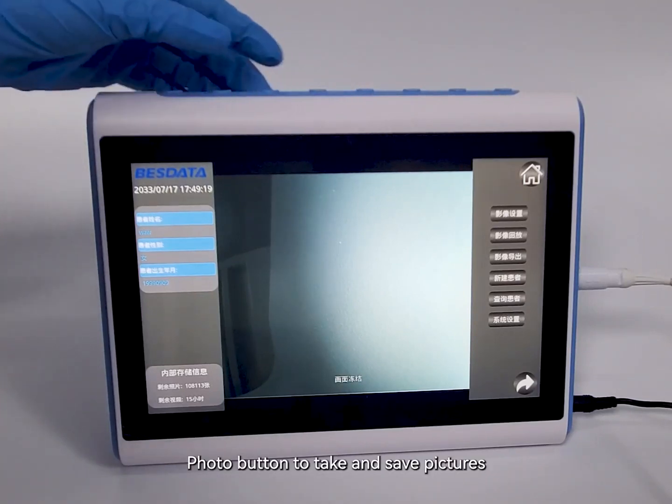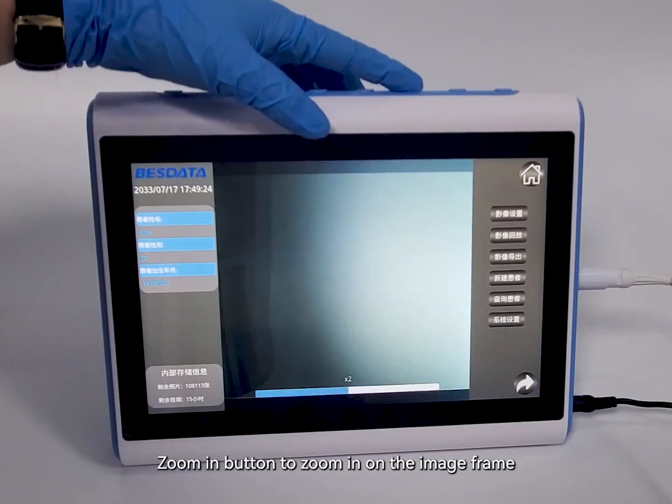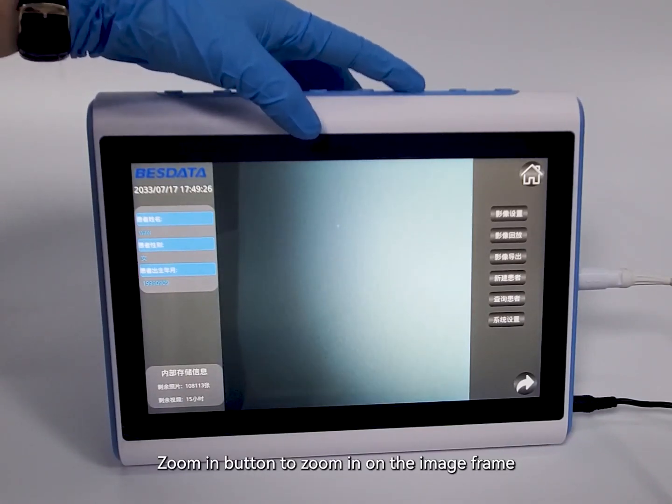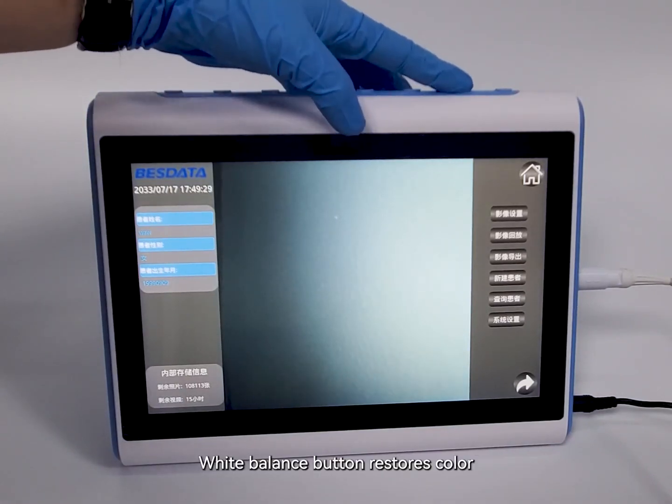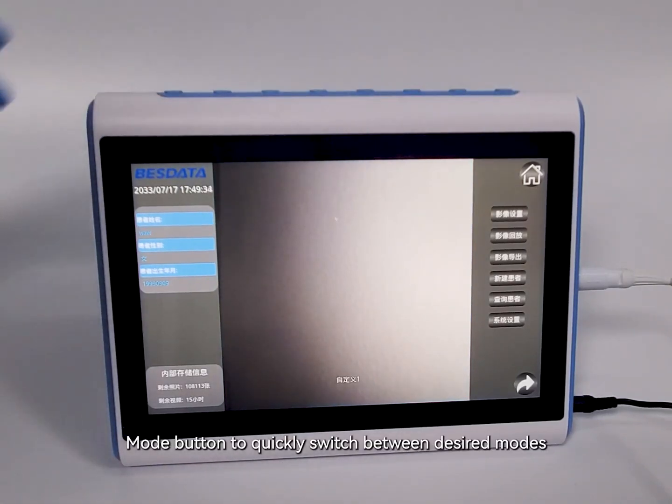Photo button to take and save pictures. Zoom in button to zoom in on the image frame. White balance button restores color. Mode button to quickly switch between desired modes.